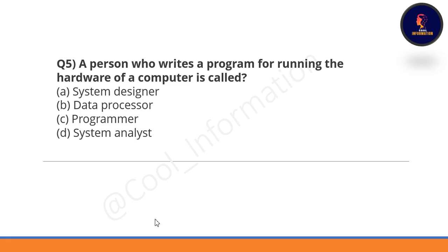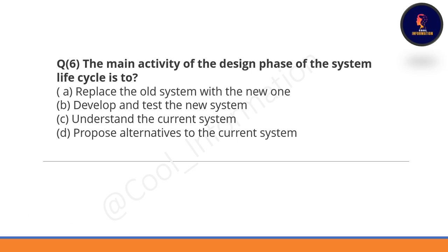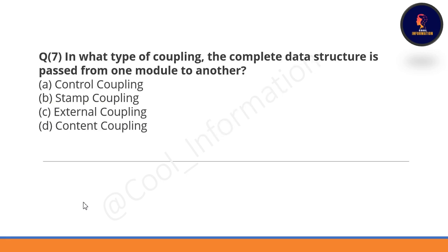Question 5: A person who writes a program for running the hardware of a computer is called what? It is called a programmer. Option C is correct. Question 6: The main activity of the design phase of a system life cycle is to understand the current system — so Option C is correct.